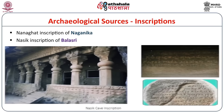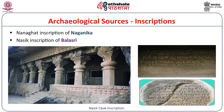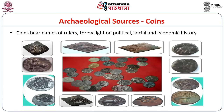Besides literary sources, archaeological sources are also available to know about Shatavahana history. They issued a number of inscriptions — the Nanaghat inscription of Naganika and the Nasik inscription of Balasri provide graphic information about the achievements of the great Shatavahana rulers Satakarni the First and Gautamiputra Satakarni. Their coins are also available in plenty and provide authentic information about the social and economic life of the age.